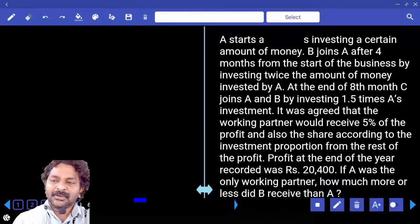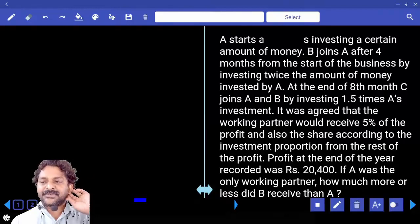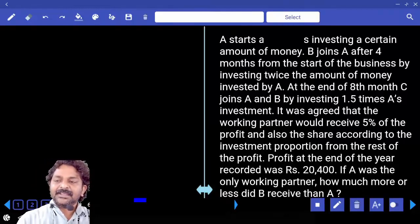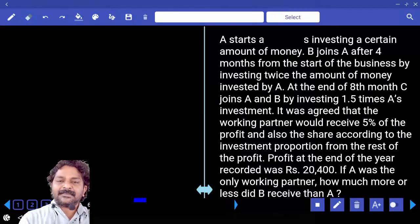A starts the business by investing a certain amount of money. B joins A after 4 months from the start of the business by investing twice the amount invested by A.